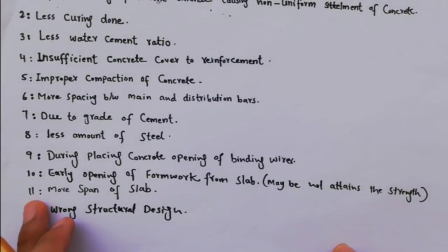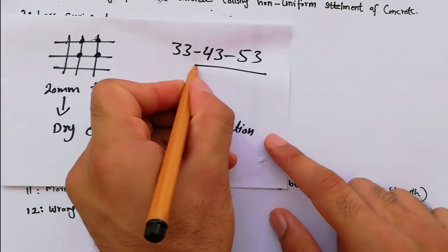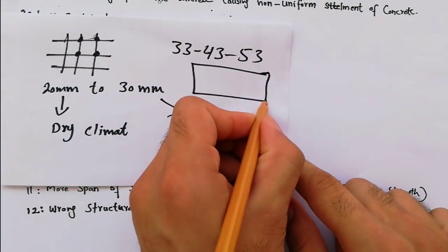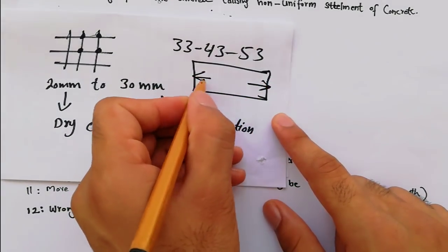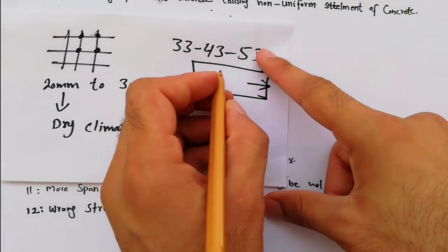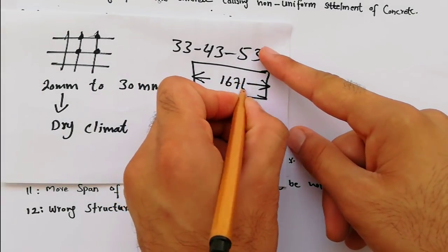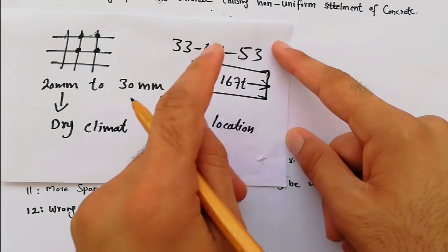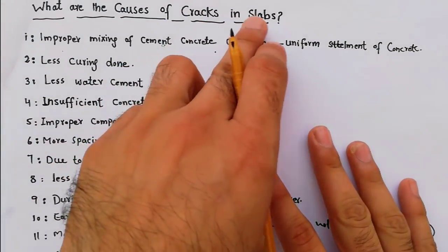Eleventh, more span of slab. The span should be - suppose this is a slab. If the span is more than 16 feet and we don't provide the columns, this is also a main reason for cracks in slabs.